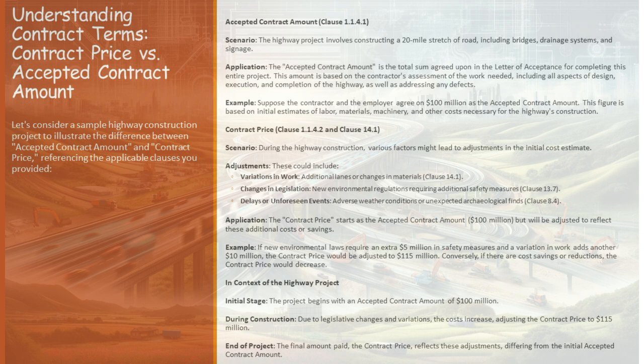As we piece together these scenarios, the story of our highway construction project takes shape. From the initial handshake at $100 million to the current standing of $118 million, the journey of the contract price is a testament to the dynamic nature of construction projects. Each adjustment — whether due to variations in work, legislative changes, or unforeseen events — reflects the realities of the construction world. They underscore the importance of flexibility, foresight, and continuous negotiation in managing large-scale projects.